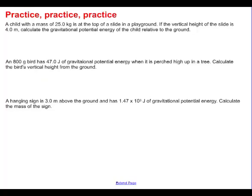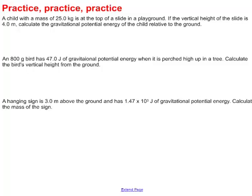I guess the best way to see this thing in action is to do a few of these. A child has a mass of 25.0 kilograms at the top of a slide in a playground. If the vertical height of the slide is 4.0 meters, calculate the gravitational potential energy of the child relative to the ground.